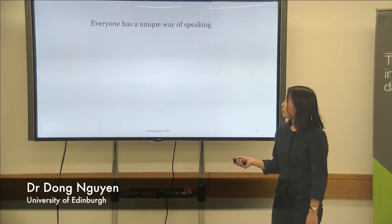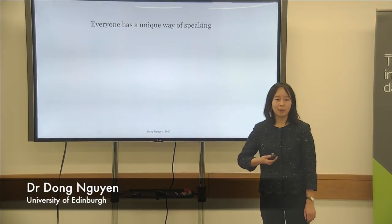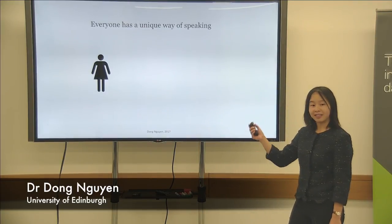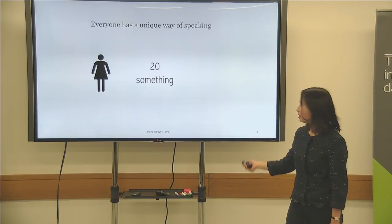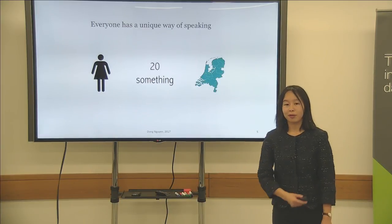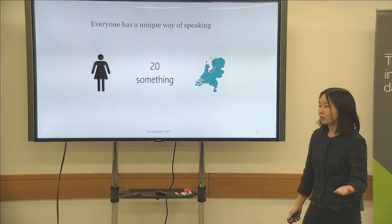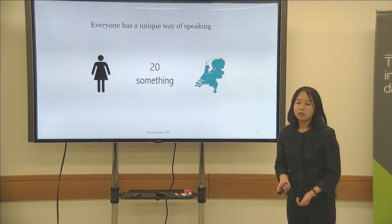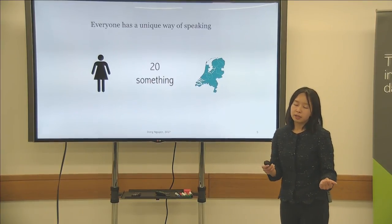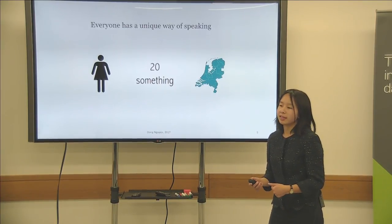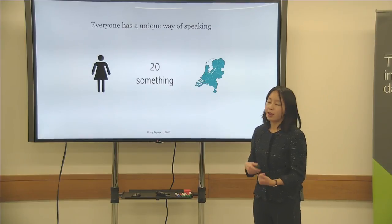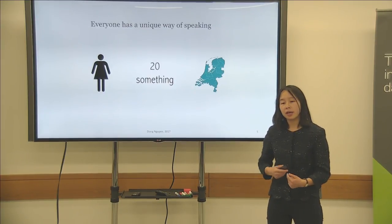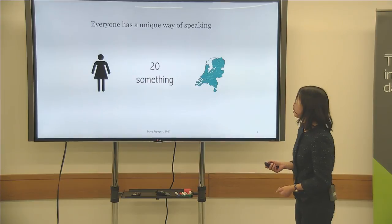Everyone has a unique way of speaking. For example, the way I'm speaking now is influenced by my gender, my age, where I'm from, the audience I'm talking to, the goal I have in mind, et cetera. So the way language relates to society is something that has been studied for a very long time within linguistics, but more recently also gained a lot of attention in computational linguistics.